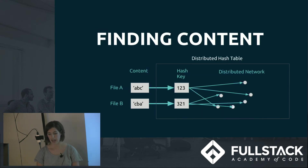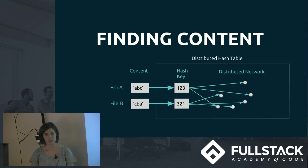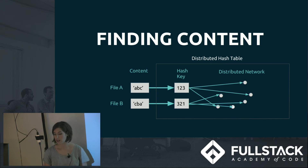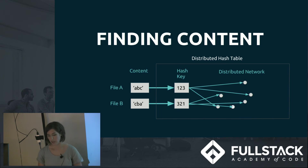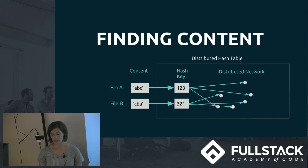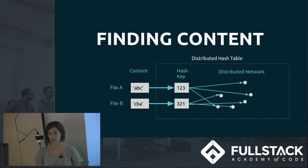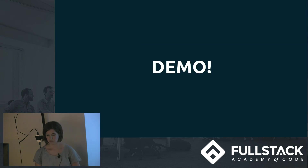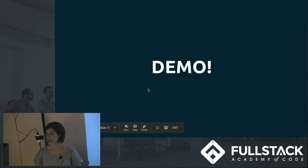Now we have this hash key — how do we use it to retrieve content? IPFS uses a system similar to BitTorrent. You have a distributed network of peers, or a swarm of peers, that all store files on their local storage and make them available for sharing, all connected via an underlying network protocol. If you want to find file A, you make a request out to the swarm using hash 123, and you're able to locate and download the content from the nearest peer that has it. Let me show you that in action.